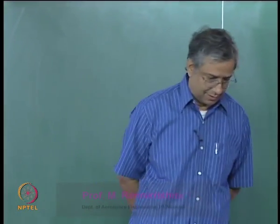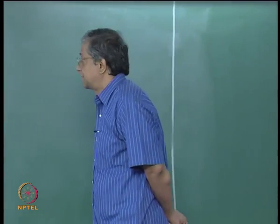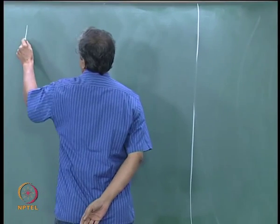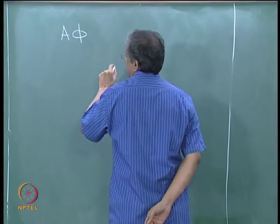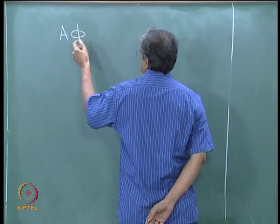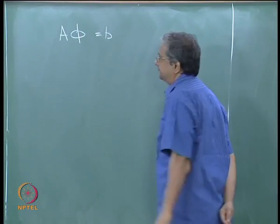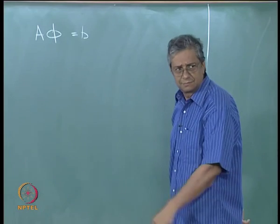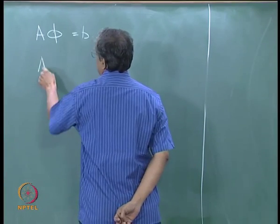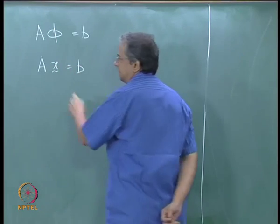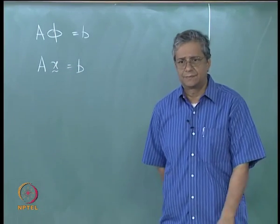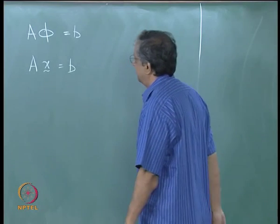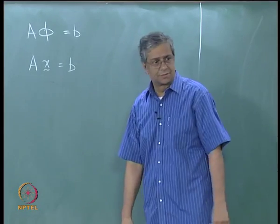In the last class we saw that Laplace's equation discretized could be written as a system of equations. I just wrote that as A phi equals some b to keep the conversation general. I will switch to the standard notation which is Ax equals b. I will put the tilde under the x to indicate that it is a vector, so that we do not confuse it with the xy coordinates.